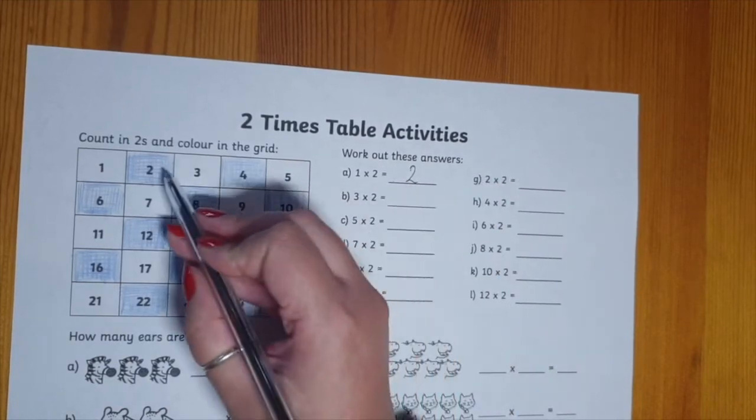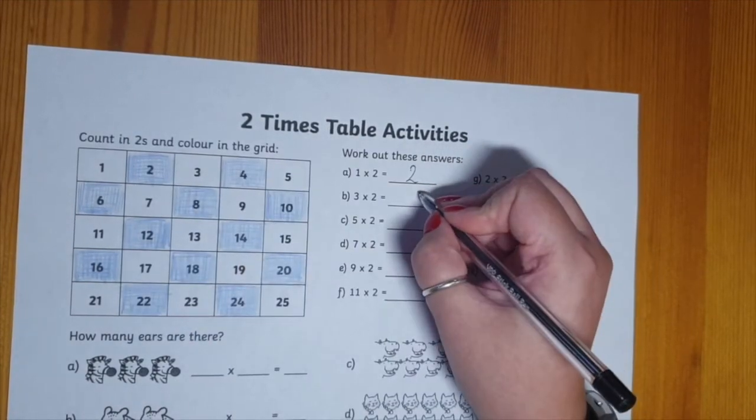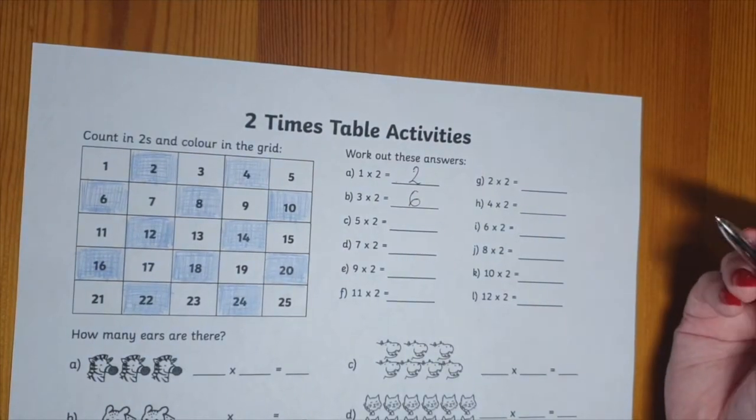Three times two. One, two, three. Three times two is six. It helps children to say it out loud.